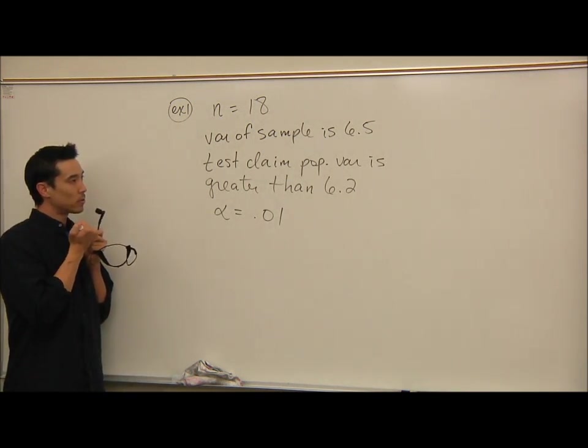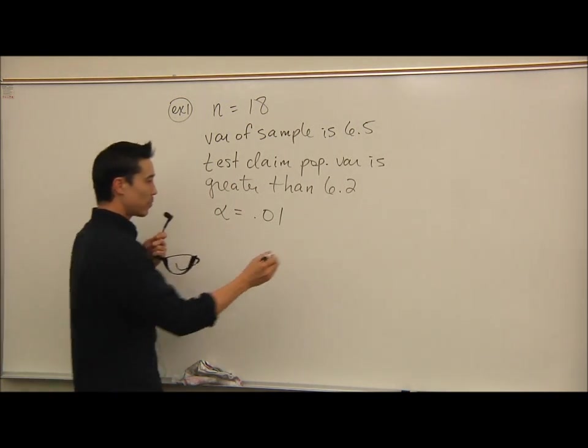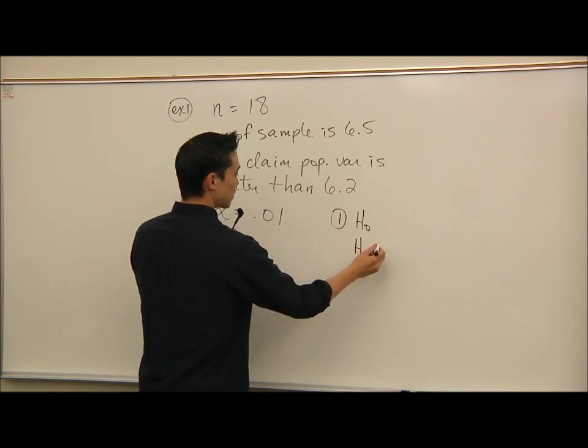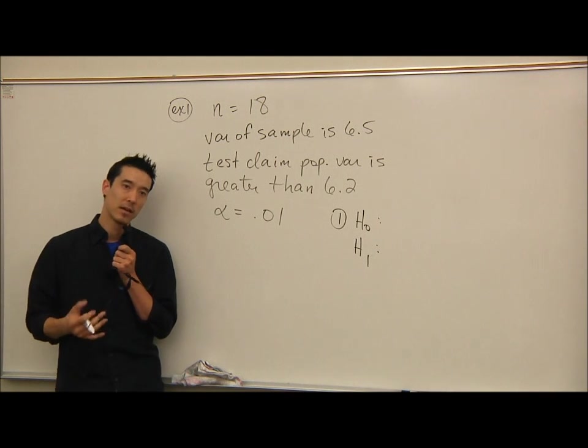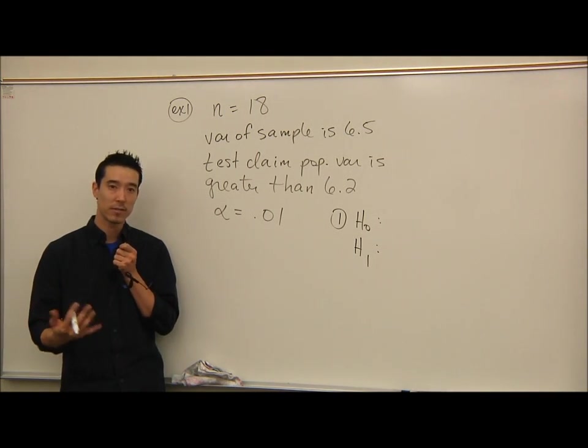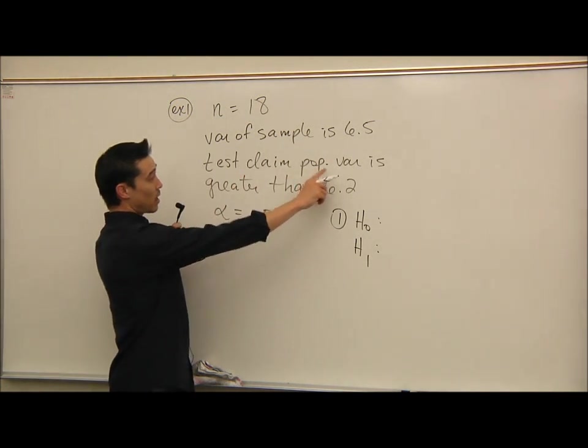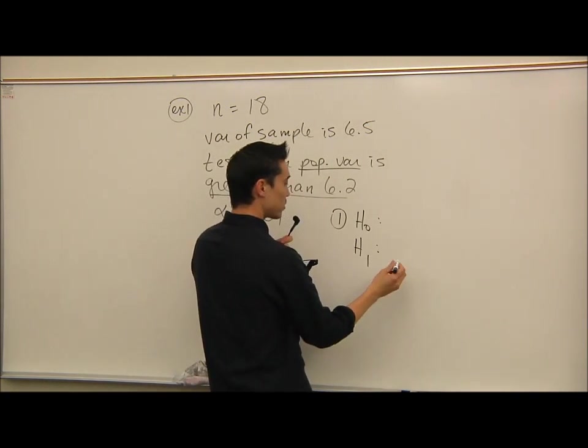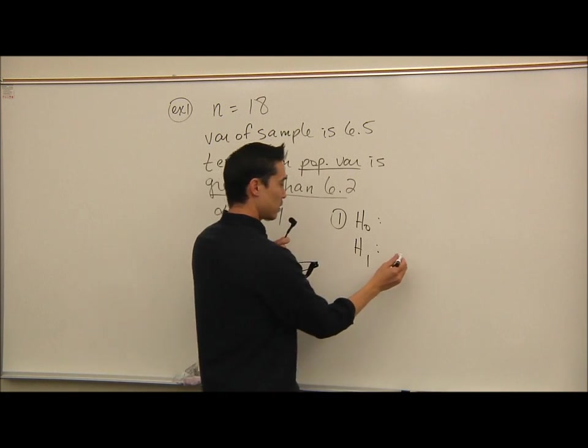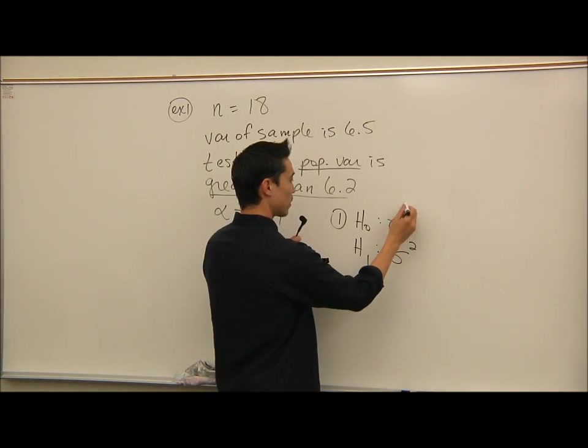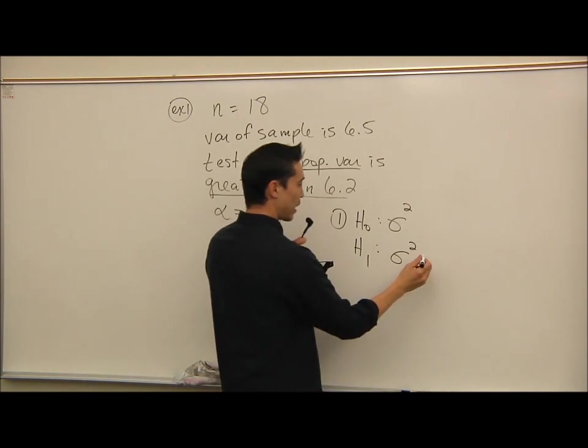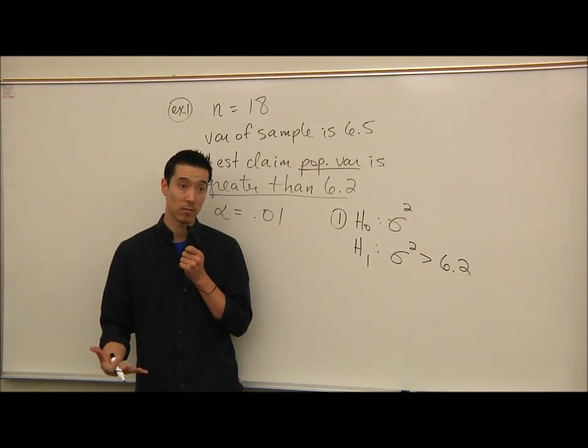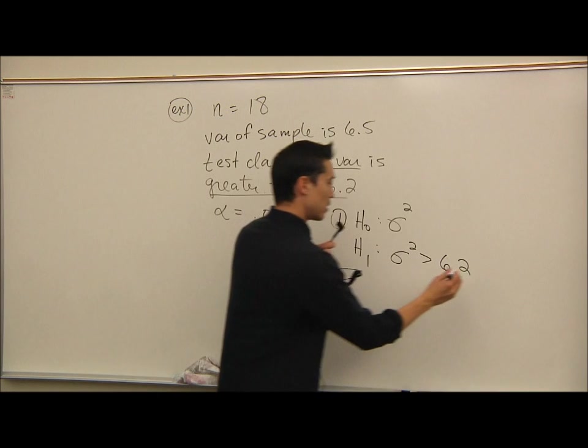So again, we're going to go through a traditional hypothesis test here. And step one will be H0, H1. And today we're doing a test, not for mean, which is mu, not for proportion, which is P, but for variance or standard deviation. And it's saying test the claim that the population variance is greater than 6.2. So population variance, first of all, what is our symbol for population variance? It's this guy, right? Sigma squared. And we're saying greater than 6.2, so that obviously has to be in my alternative hypothesis, because there's no equal sign with it, right? And we've memorized there's always an equal sign with the null. So this is my claim.